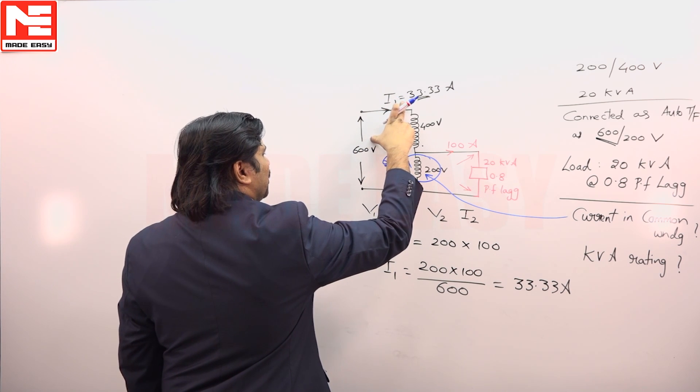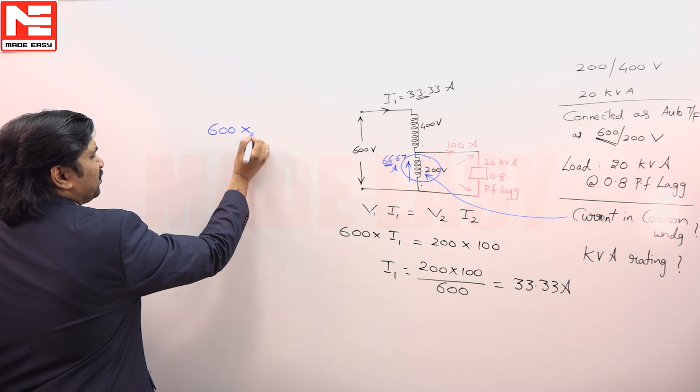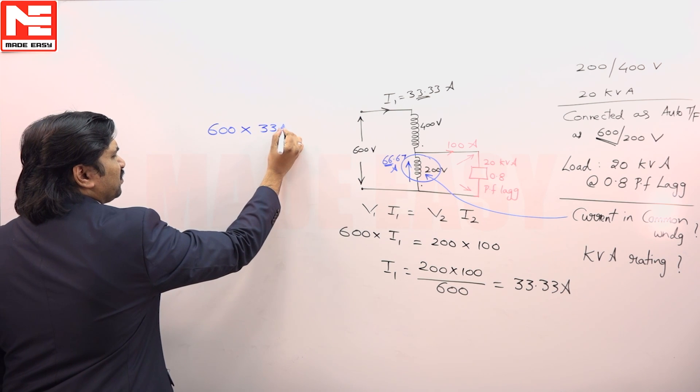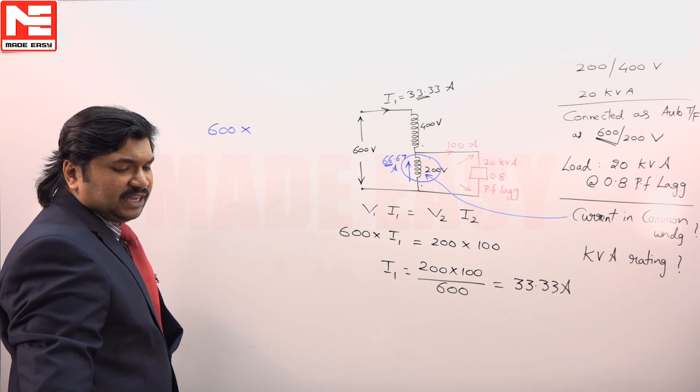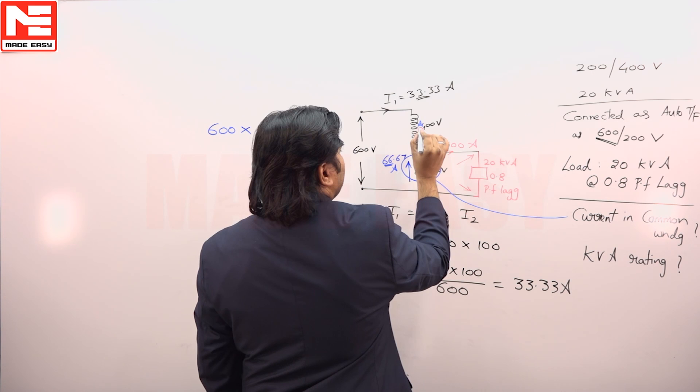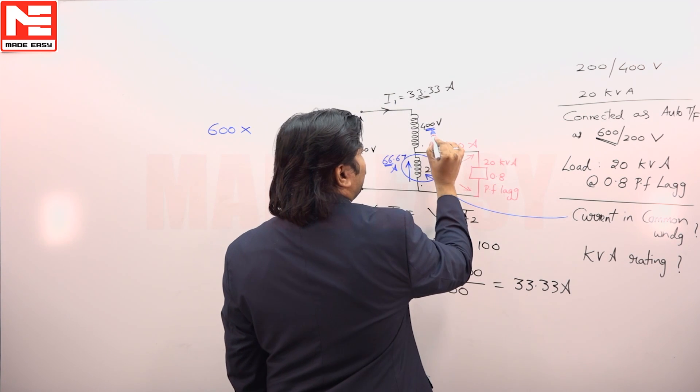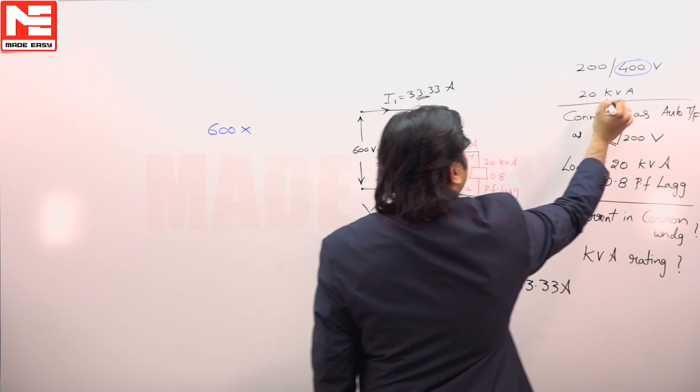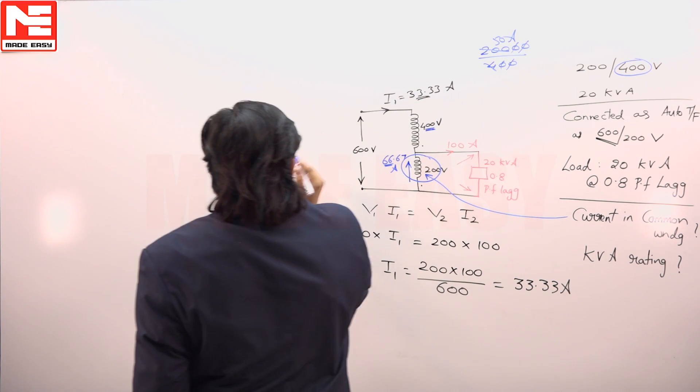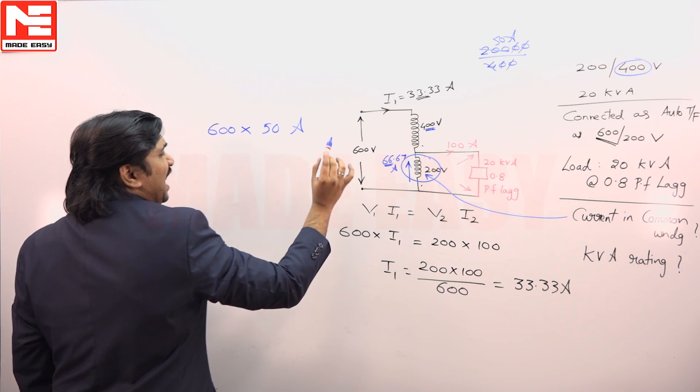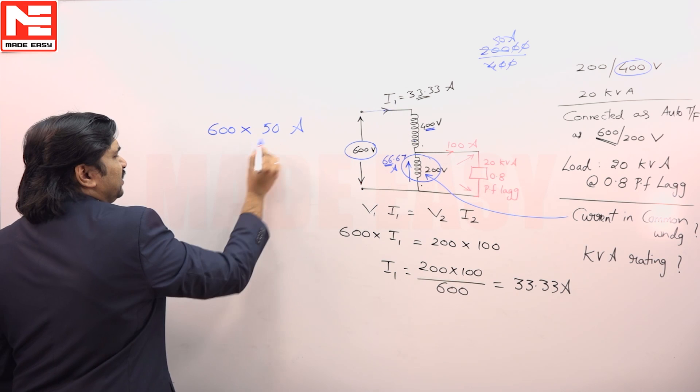What is v1*i1? 600 into what is i1? In the 400 winding, what is the current rating? If it was a two-winding transformer, when it is a two-winding transformer in 400 volts, the current rating is 20 kVA by 400, it will be 50 amperes. So 600 into 50 amperes means actual capacity of this winding is 50 and it was 600 volts, then the rating is 30 kVA.